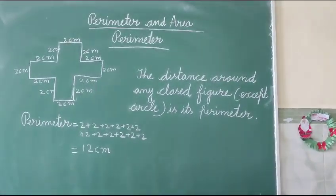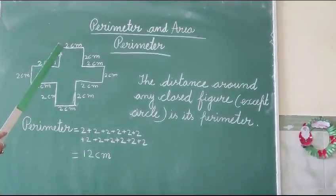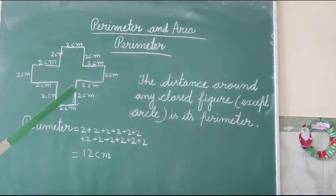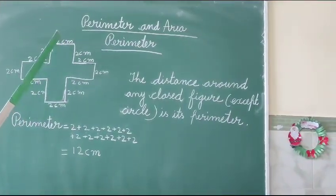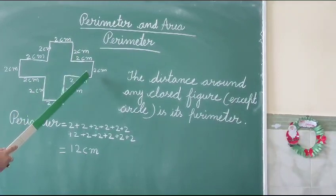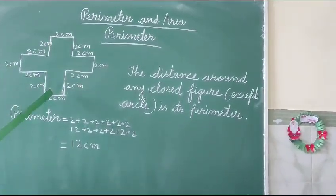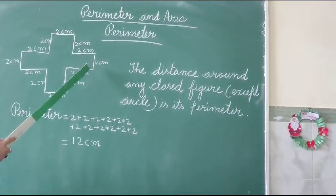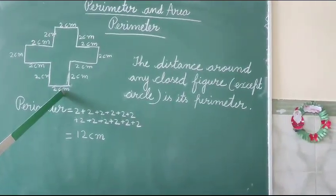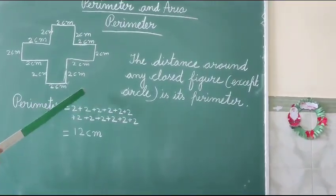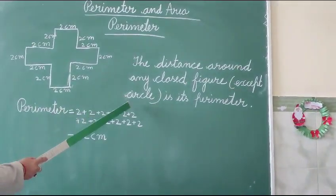Today first of all I will explain what is perimeter. So see this figure children. What is perimeter? Perimeter is a distance. Listen very carefully. Perimeter is a distance around any closed figure. Around any closed figure is its perimeter. Any closed figure. Open figure you cannot find the perimeter and circle also. Any closed figure except circle.